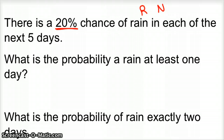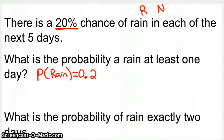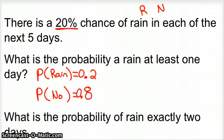So what's the probability of rain at least one day? First, think about our R and our N, our successes and failures. The probability of success — rain — is 0.2, a 20% chance. The probability of no rain is 0.8, or 80% chance of no rain.